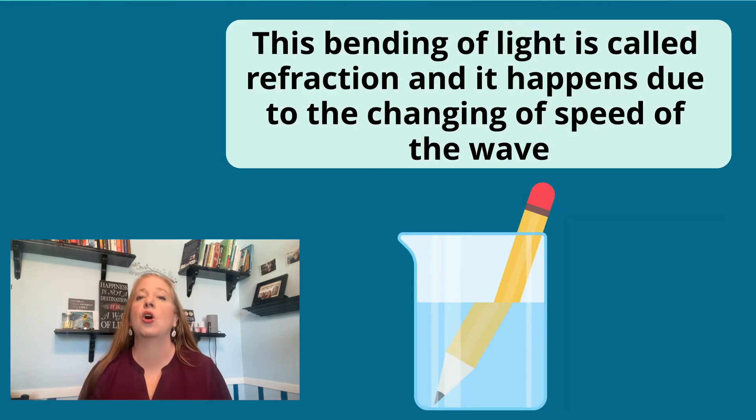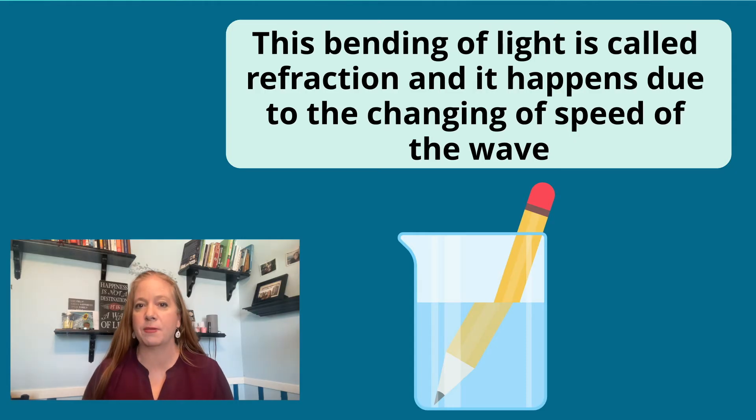This bending of light is called refraction and it happens due to the changing of the speed of the wave. Light speeds up when it enters a less dense medium like air, and slows down when it enters a more dense medium like glass. This explains why we see boundaries between different materials such as air, glass, and water.